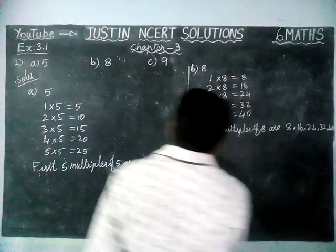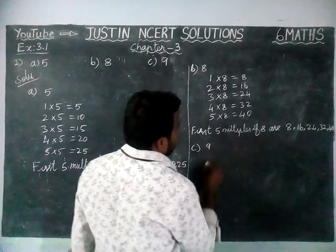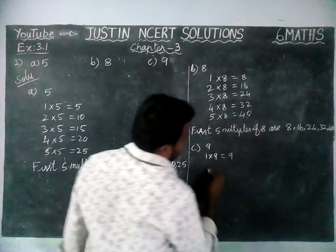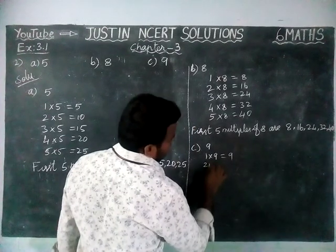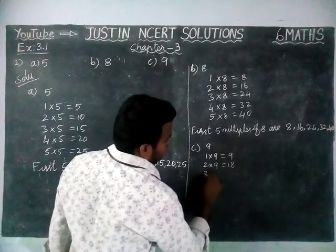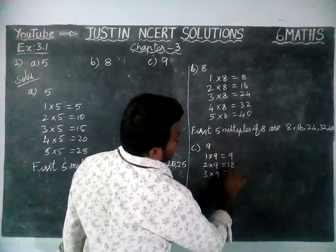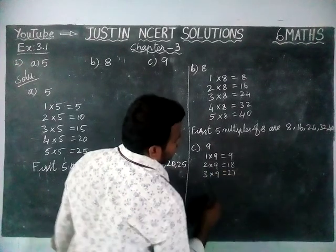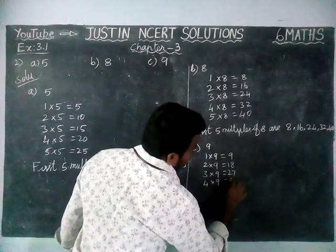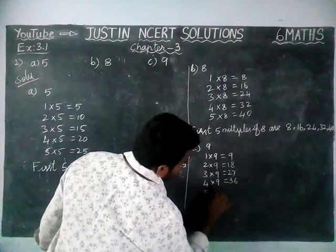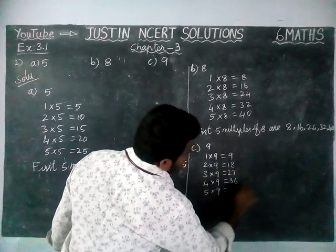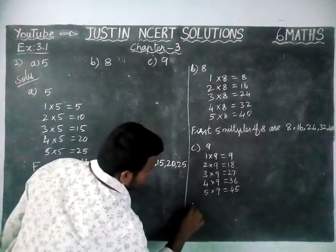Next, Option C: 9. 1 nine is 9, 2 nines are 18, 3 nines are 27, 4 nines are 36, 5 nines are 45.